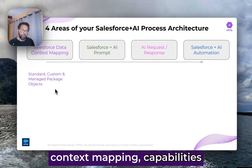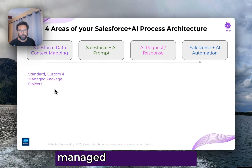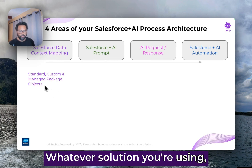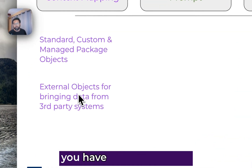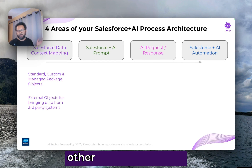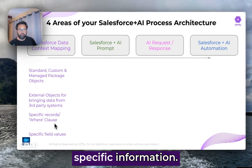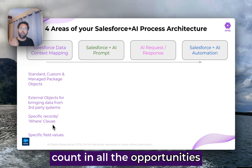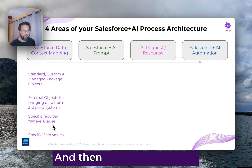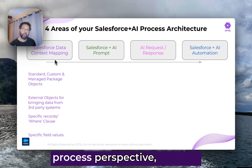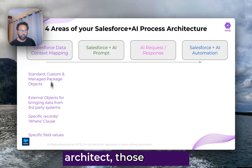In terms of Salesforce context mapping capabilities, you can extract information from standard, custom, and managed package objects. I'll show a demo from a GPT-5 point of view, but this applies to all solutions. You may also have external objects from which you want to bring external data — OData-compatible systems, OData-compliant sources. Then there's the question of what specific information to send: you want the intelligence to filter, send specific records — maybe an account and all open opportunities for an account 360 — and what specific field values to send and what they mean. This is all the data context mapping to think about — great for those coming from a business process perspective: business analysts, data analysts, system administrators, architects.